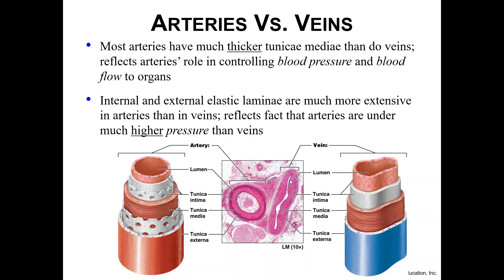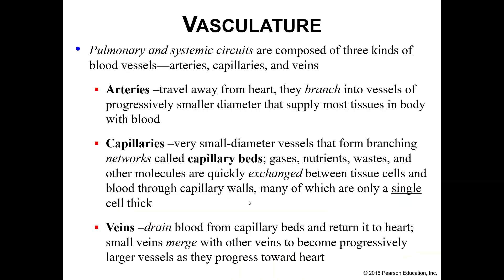One thing you will notice is that the vein does have a much larger lumen compared to the artery. Both your pulmonary and systemic circuits are composed of arteries, capillaries, and veins. Arteries take blood away from the heart and branch off, getting progressively smaller in diameter as they supply tissues and organs. Eventually they branch into capillary beds where gases, nutrients, and wastes are exchanged — many capillary walls are only one cell thick. Once gas exchange is complete, veins drain the capillary beds and return blood to the heart, where it picks up new oxygen and the cycle repeats.